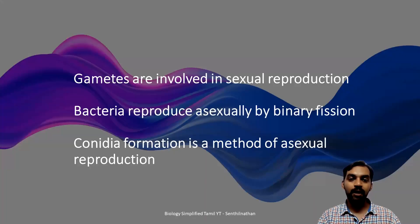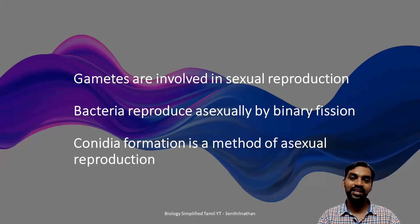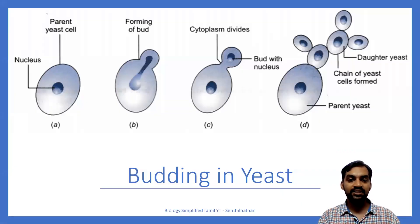What makes the other options incorrect? Gametes are involved in sexual reproduction, not asexual reproduction. Bacteria reproduce asexually by binary fission, not budding. Conidia formation is a method of asexual reproduction in fungi, not sexual reproduction. In yeast budding, there is an extra outgrowth from the yeast cell, the nucleus divides, and the new cell is cut off from the parent organism.